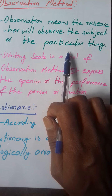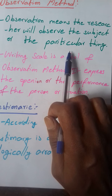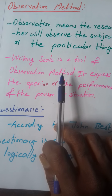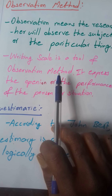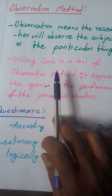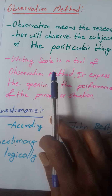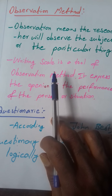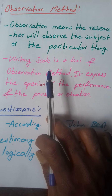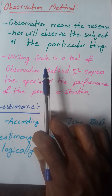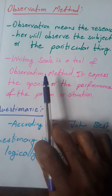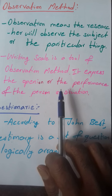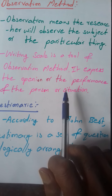A Rating Scale is a tool of the Observation Method. It expresses the opinion or the performance of a person or situation. This is a tool of Observation.